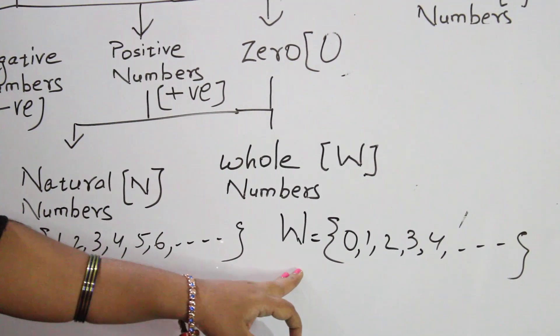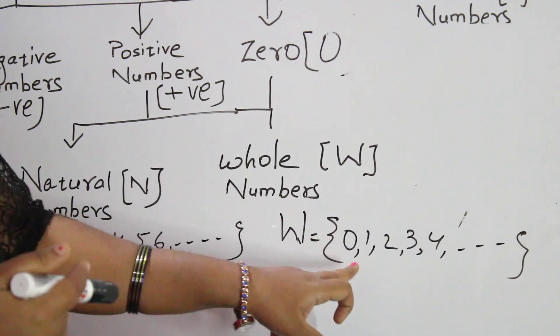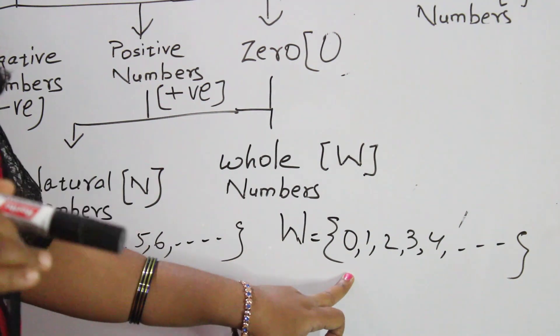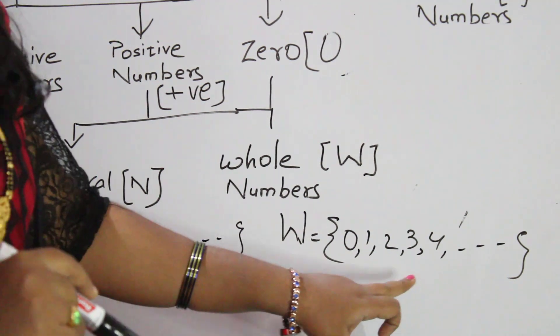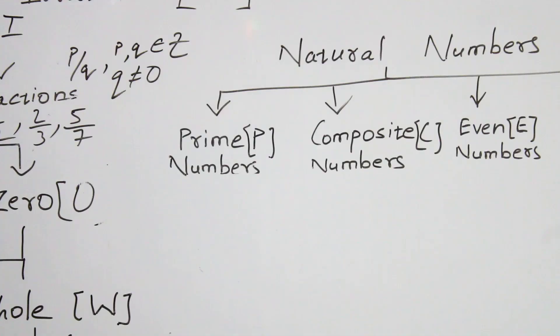How to get the next whole number? By adding 1. For example: 0 + 1 = 1, 1 + 1 = 2, 2 + 1 = 3, and like that.